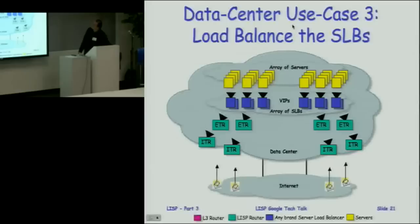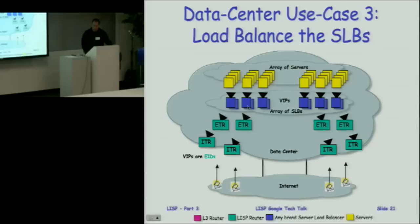The third data center use case is load balancing the load balancers. The problem today is that packets addressed to VIPs aren't getting enough spread across servers. You treat the virtual IP addresses of the load balancers as EIDs — when packets come into ITRs, they decide which ETR decapsulates, spreading load across load balancers. Each locator maps to a set of load balancers sharing the same VIP, enabling hierarchical load balancing.